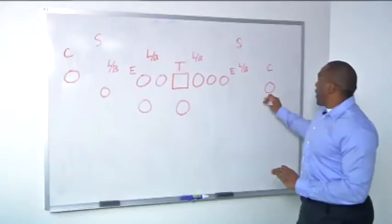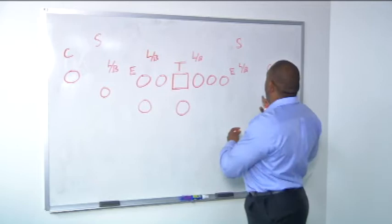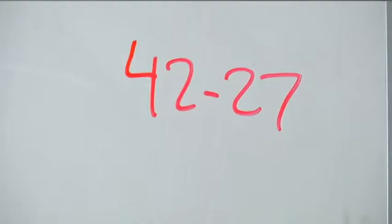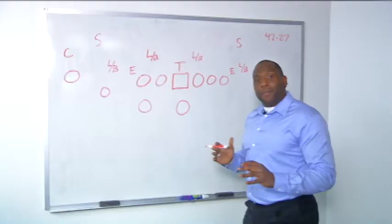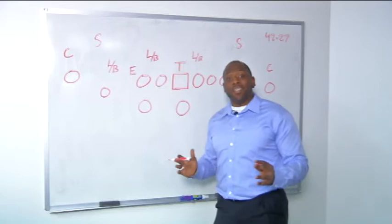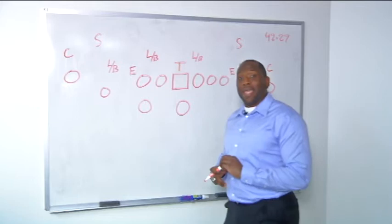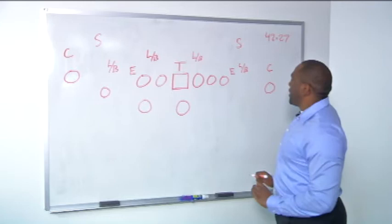You have one corner here on Demaryius Thomas, another corner here on Eric Decker. Now, what's interesting about the Baltimore Ravens is this is on third and eight. Let's not forget the score is 42-27, about four minutes left in the fourth quarter. So it's not the end of the ball game. If the Ravens get a stop here, they're only down by 15, two possessions, and they can get back into this game. So a very important play here.